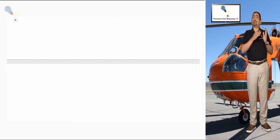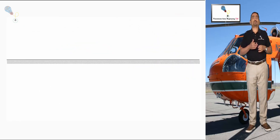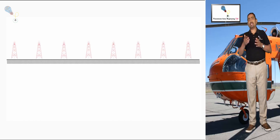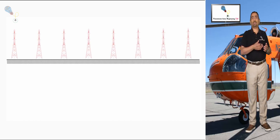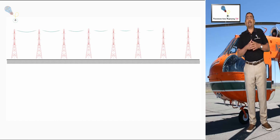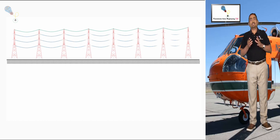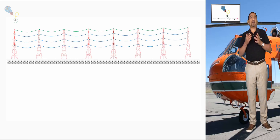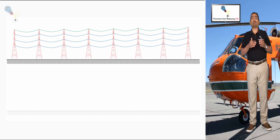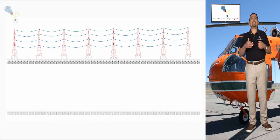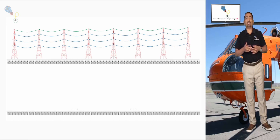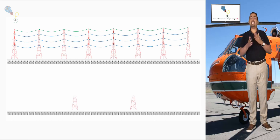In order to obtain the conductor sag, we must first have the ruling span. We will quickly define this term, which we will talk about in more detail later. At the beginning of a transmission line project, obviously there are no towers, no structures, no nothing. Therefore we don't have the spans between them, so we have to think of an average span or a representative one which will serve for the initial calculations.